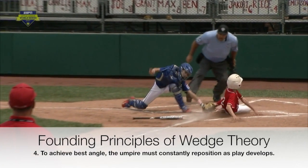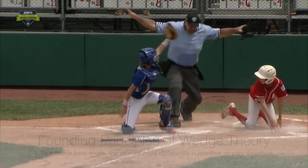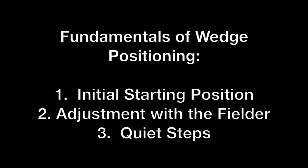This is the best viewing angle of the play, as both the runner and the fielder change this angle constantly throughout the development of the tag play. Using wedge theory requires umpires to follow three basic steps to achieve optimum positioning. First, umpires must assume a starting position of five to seven feet from the fielder and maintain that relationship of five to seven feet throughout the duration of the play.